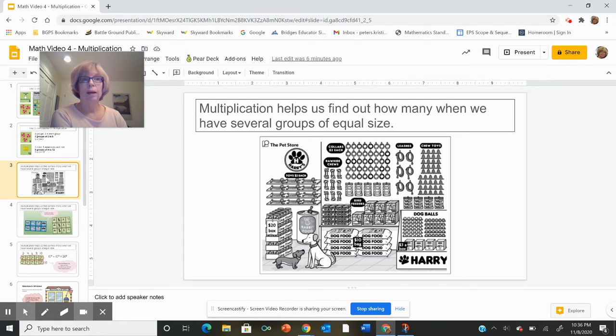And we talk about how multiplication tells us how many when we have many groups of the same size and we don't want to count them all. So we looked at these different items and tried to figure out how many without counting them all.